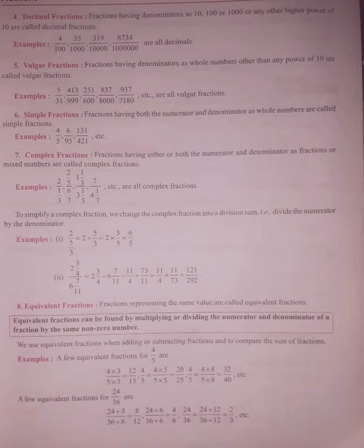To simplify a complex fraction, we change the complex fraction into a division sum, that is, divide the numerator by the denominator. For example, 2 upon 5 upon 3. Here, 2 will be divided by 5 upon 3. Complex fractions को simplify करने के लिए हम इनको division sum में पहले change करते हैं. तो 2 upon 5 upon 3 को हम लिखेंगे 2 divided by 5 upon 3.